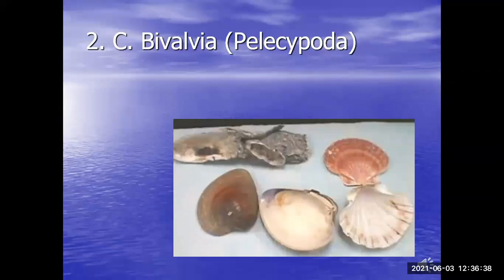Since bivalves are stuck in the sand, they have a specialized means of feeding. They put out two tubes — the incurrent and excurrent siphons — above the sand. Water goes in the incurrent siphon, passes through the body past the mantle and gills where plankton — microscopic organisms in the ocean — get trapped. Then the water goes out the excurrent siphon. That's what they eat. So clams are filter feeders.